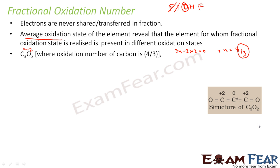Why this fraction? Let's investigate. If you see the structure of C3O2, there are 3 carbon atoms. Two of them have an oxidation state of plus 2, while the one in the center has an oxidation state of 0. So if you find the average: (2 + 2 + 0) / 3 = 4/3. The method we apply gives the average oxidation state. Sometimes a particular atom in a compound does not have the same oxidation state as others. If there are 3 or 4 atoms, they may have different oxidation states, and that's why we get fractional oxidation numbers.